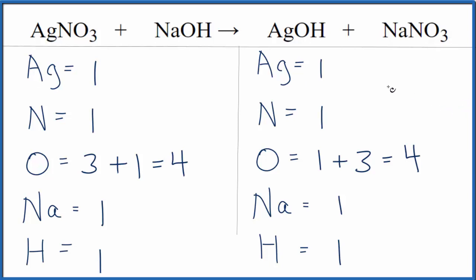One additional note, AgOH will break down to give you another set of products. So this is kind of a reaction that happens and then this breaks down to give Ag2O plus H2O and then the NaNO3. But for this equation it's balanced.